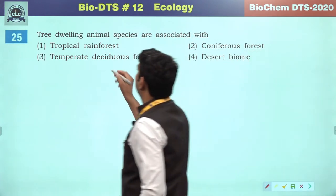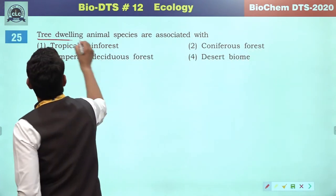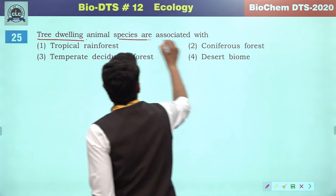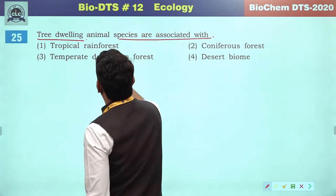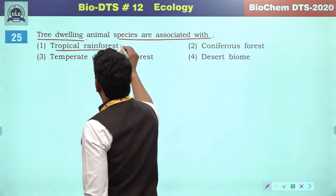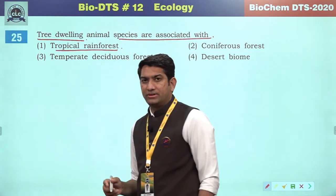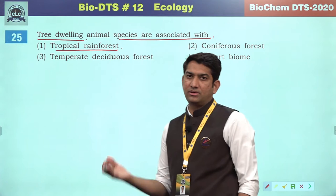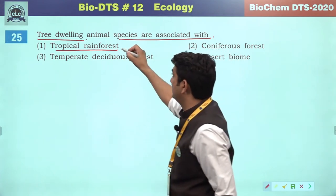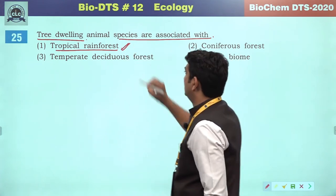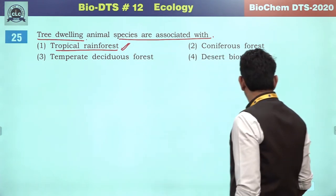Tree-dwelling animal species are associated with tropical rainforests. A tree-dwelling organism will exist in the tropical rainforest and they are pollinators also.